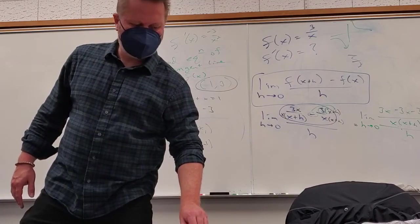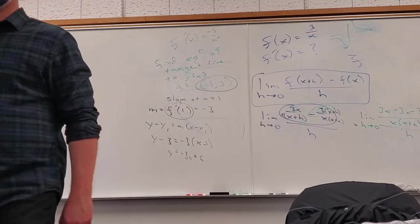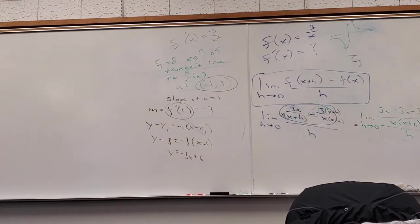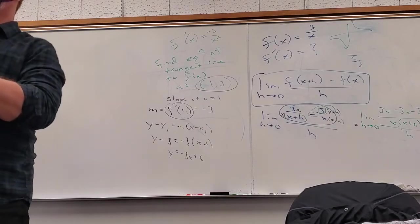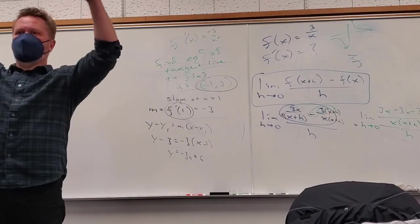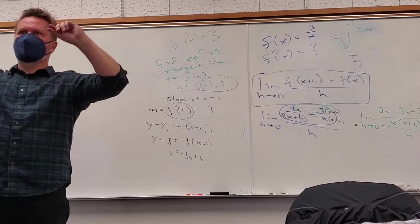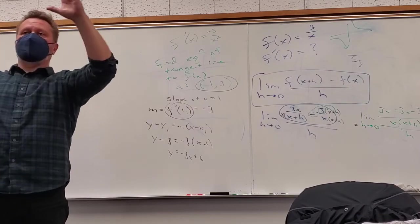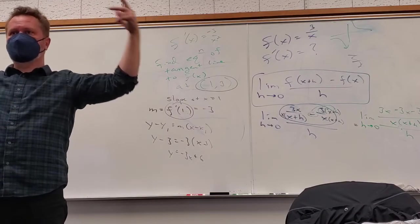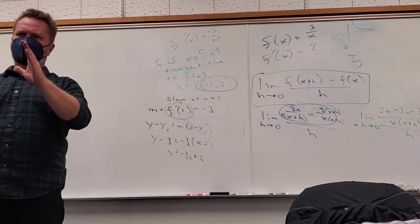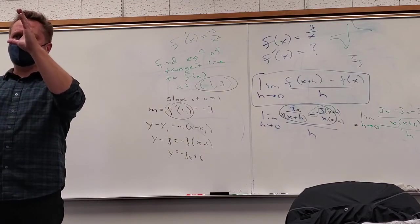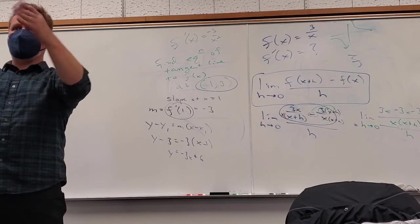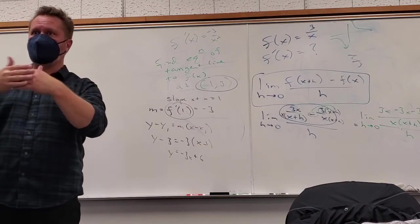A student asks: when finding a limit, you can only plug in a value when you know it's continuous — do you have to prove continuity first? The instructor explains: for polynomials and rational functions with nonzero denominators, it's straightforward and you don't need to write it out explicitly. If you plug in and get an actual value like 7 over 2, it's obviously continuous at that point.